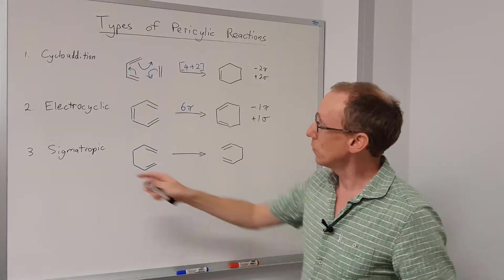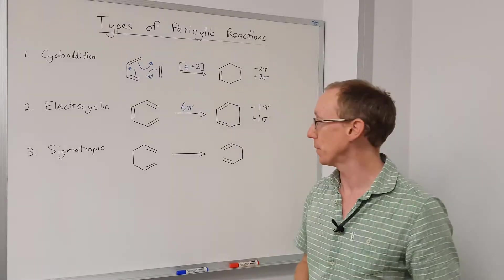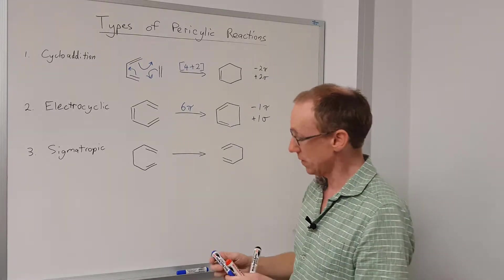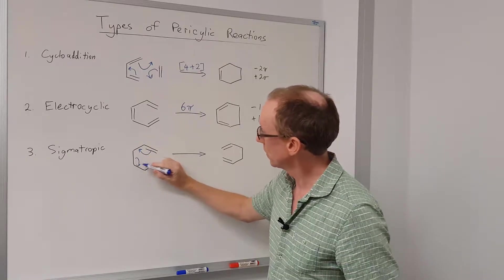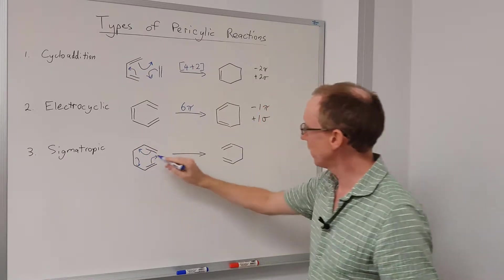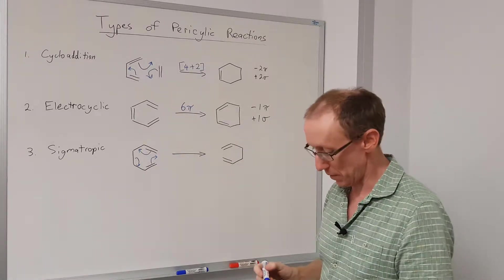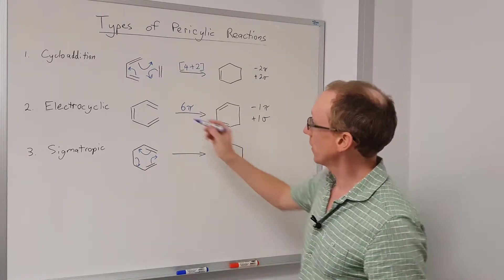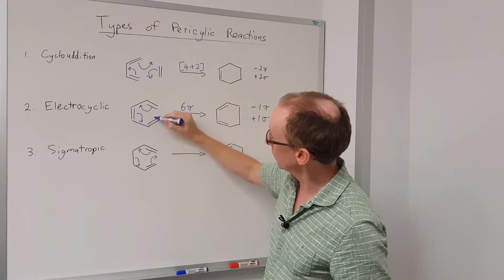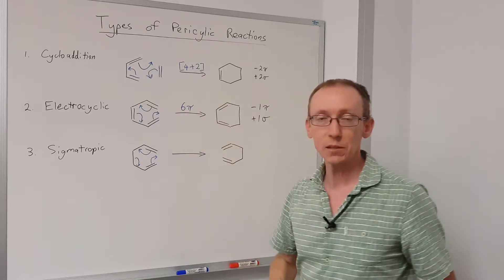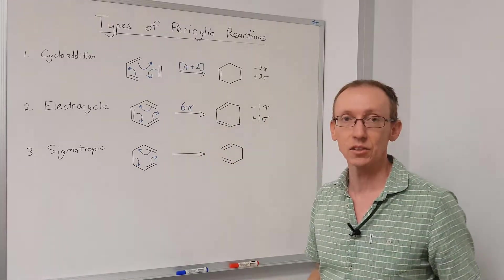And then the final type of pericyclic reaction is a sigmatropic rearrangement. And so in this case, we would draw curly arrows like this to show how that forms this other species on the right. And sorry, I skipped over something here, the electrocyclic reaction, we can also draw curly arrows showing those six pi electrons moving around in a circle to make the cycloaddition.